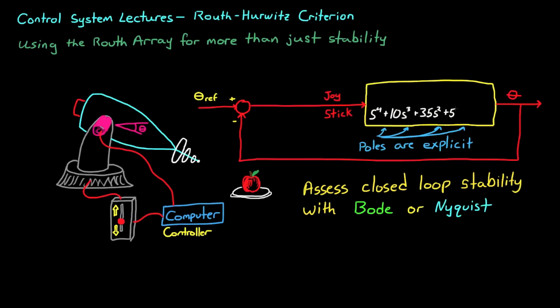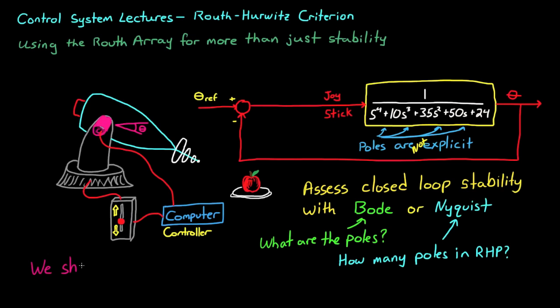However, what if you determined the open loop transfer function looked something like this, where the poles and zeros are not explicitly defined? This makes using Bode plot very difficult, because it's hard to approximate a Bode plot by hand without building up from explicit poles and zeros. This also makes a Nyquist plot difficult, because although you don't necessarily need to know where the poles and zeros are, you still need to know how many exist in the right and left half planes. And now, as you know, the best method for determining closed loop stability of a system like this is with the Routh-Hurwitz criterion.